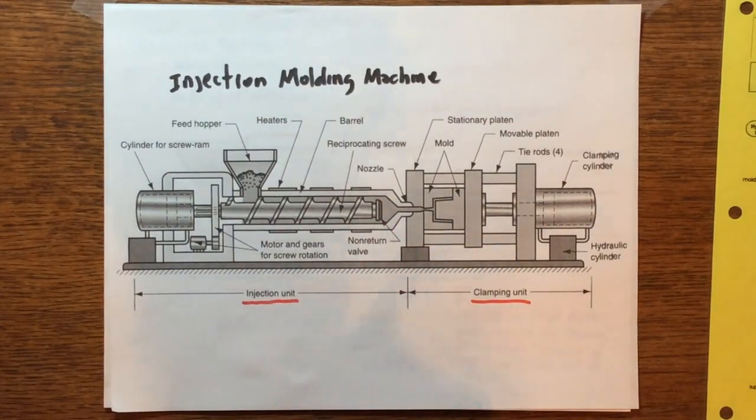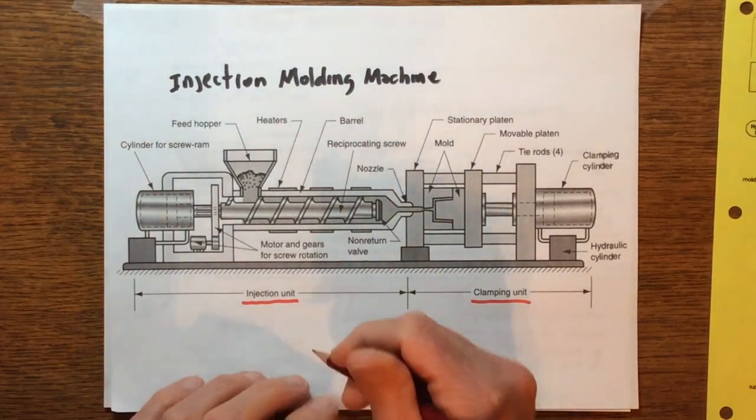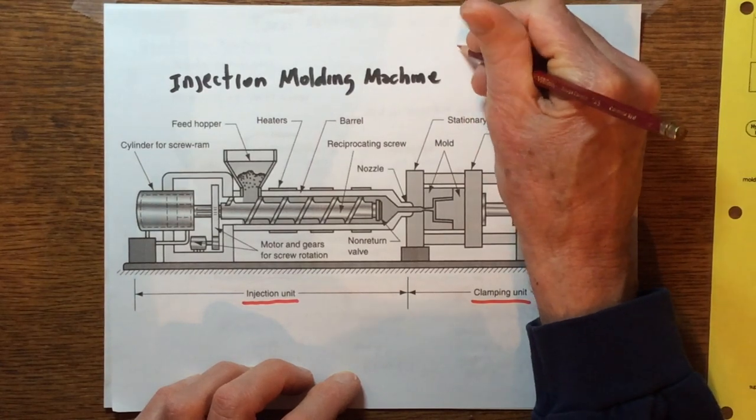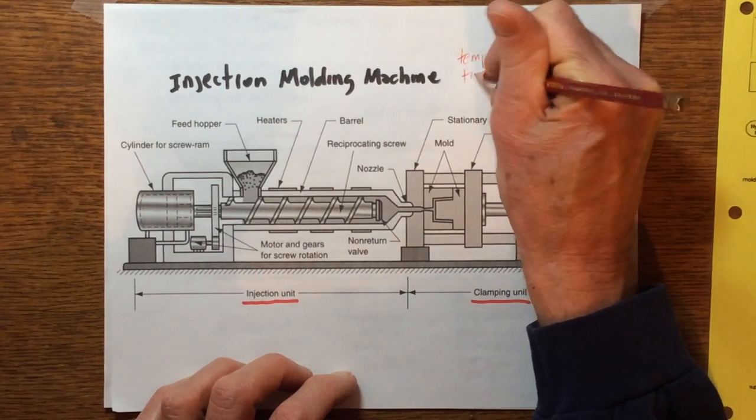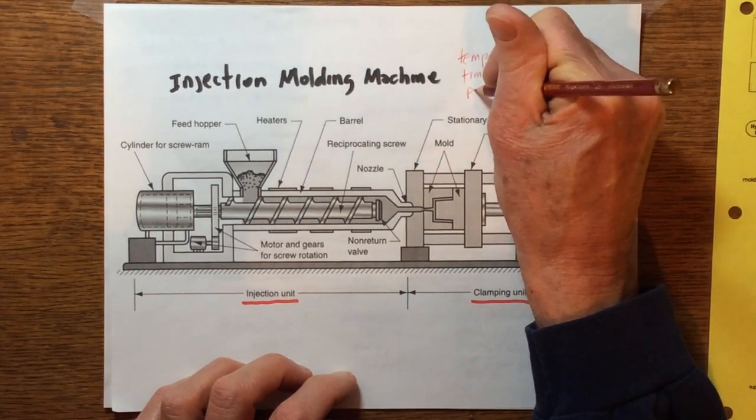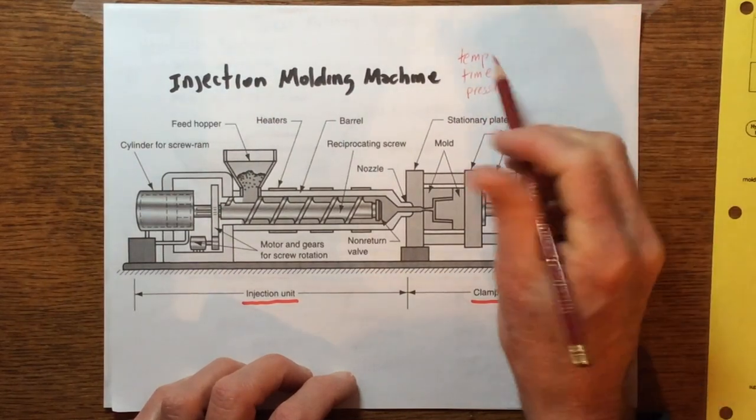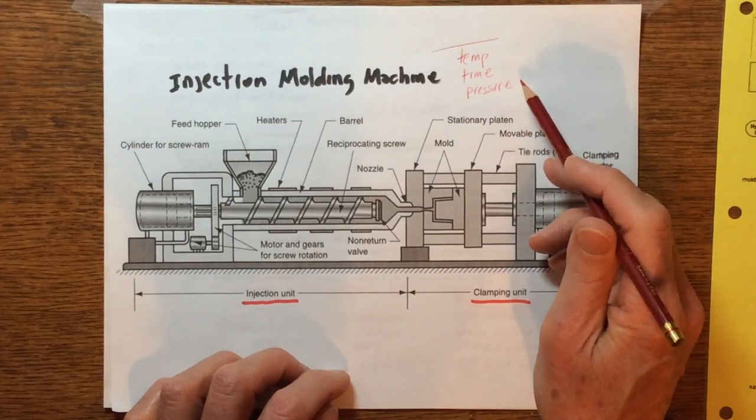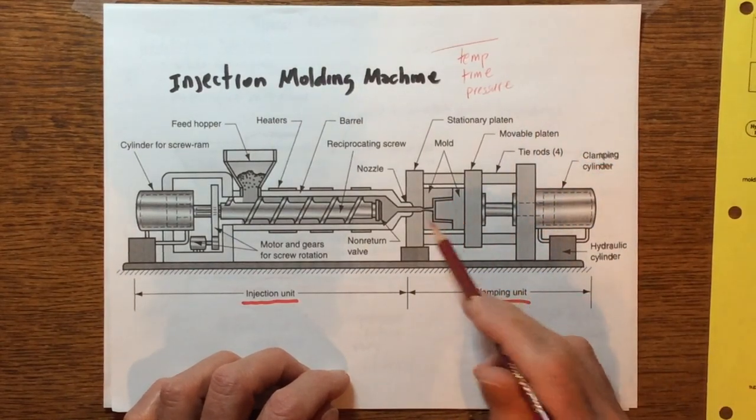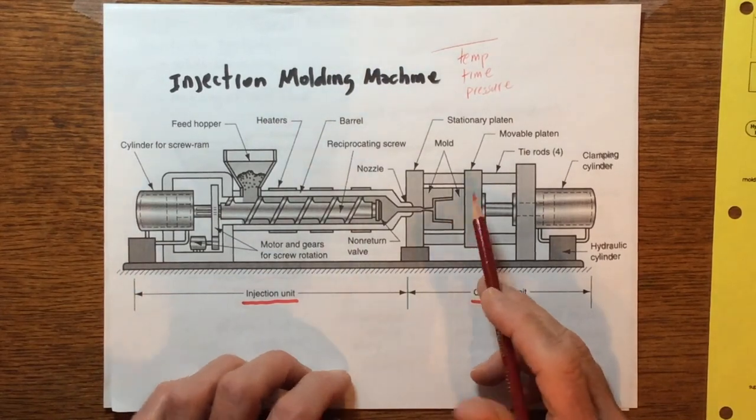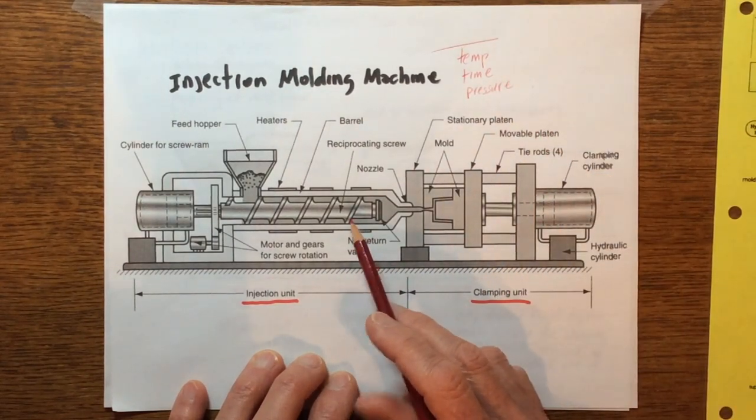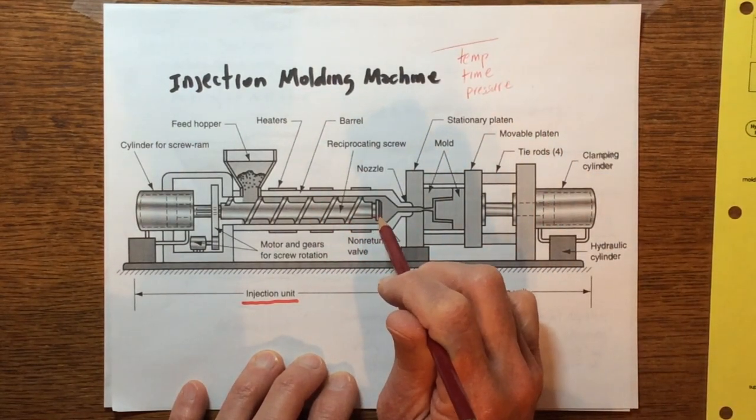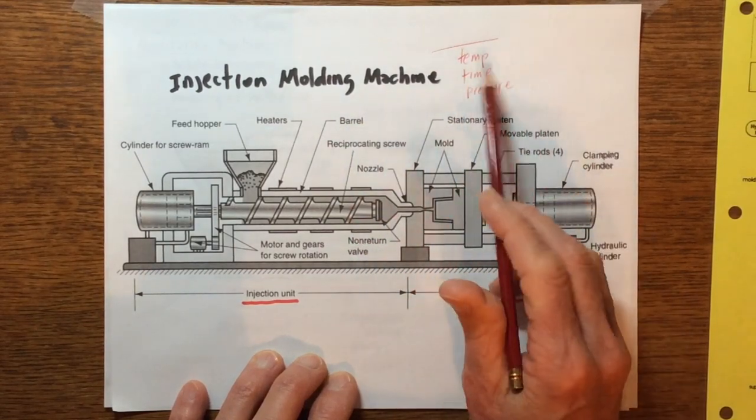There's a lot of difference between that and what the extruder does, but the same operating principle with respect to how we plasticize the polymer. Let's talk about the parameters here. There's three very essential parameters that are being controlled, and they are first of all temperature, time, and pressure. Those three parameters all have to be set perfectly for you to get a good part out of here.